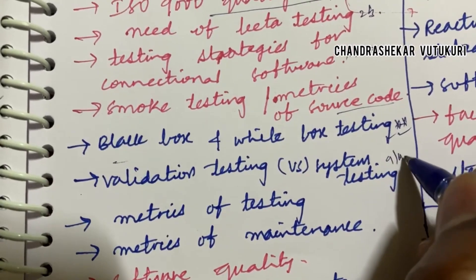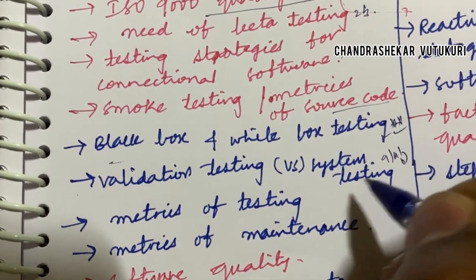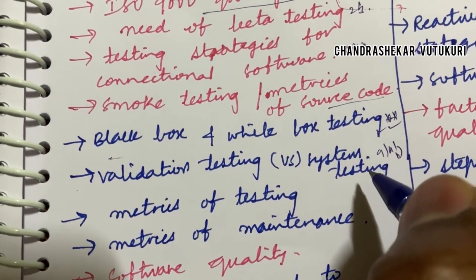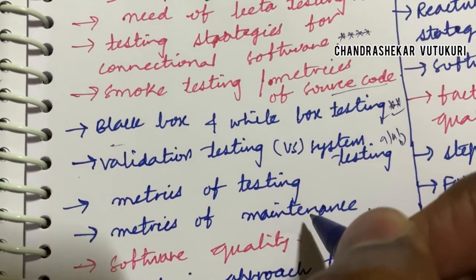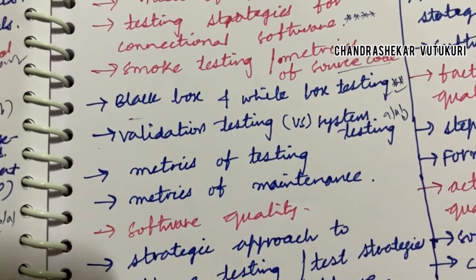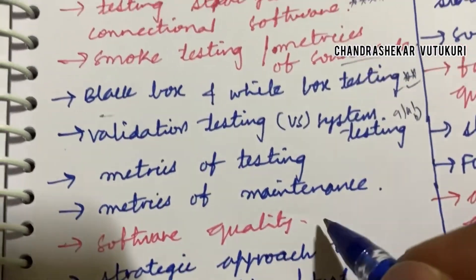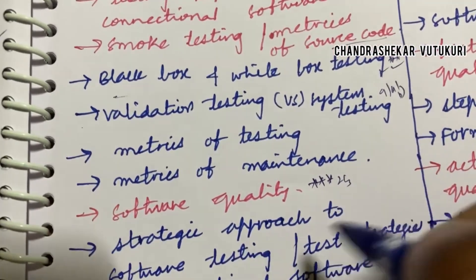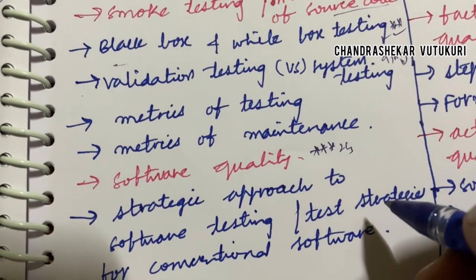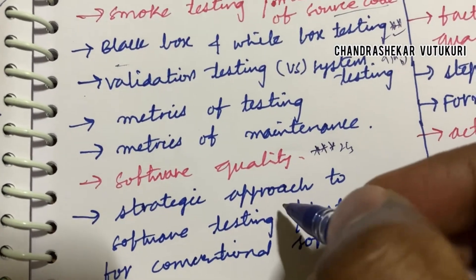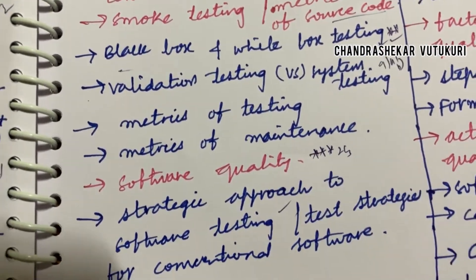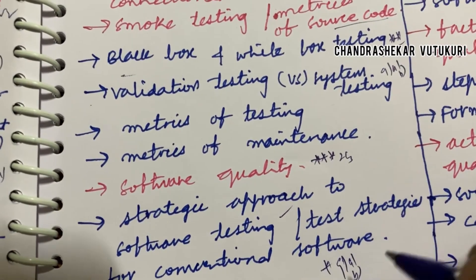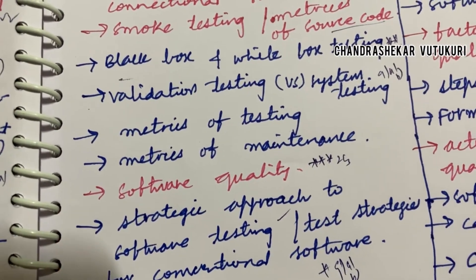For 9A and 9B: validation testing versus system testing and their differences, metrics of testing, metrics of maintenance, software quality — define the term — may be a two or three mark question. Strategies and approaches to software testing and test strategies for conventional software may be the 9A as well as 9B questions.